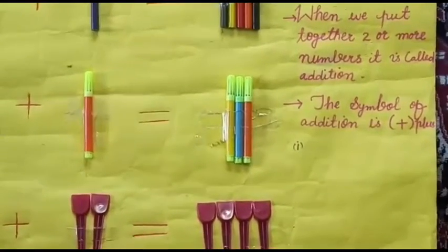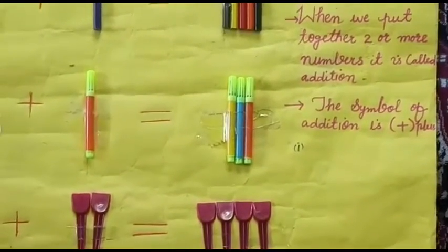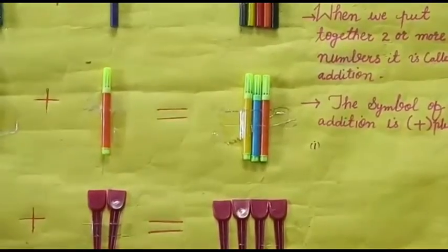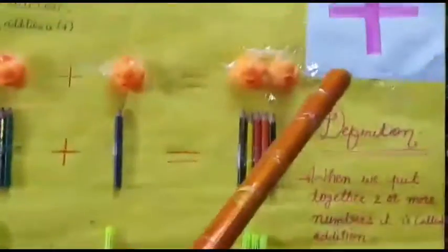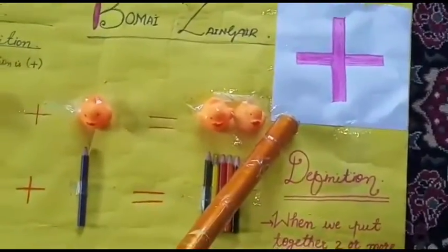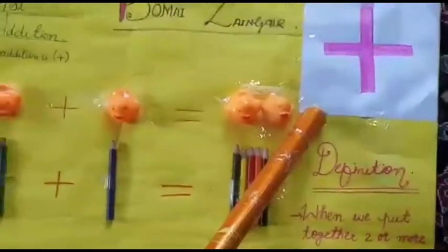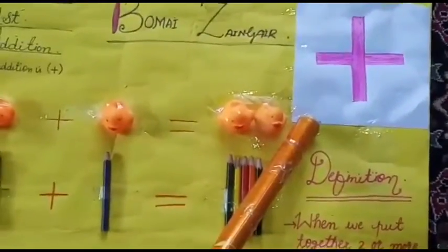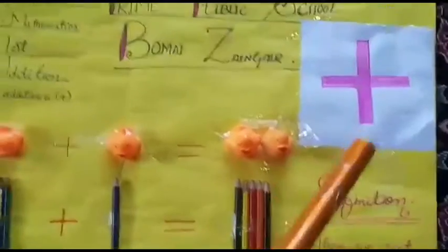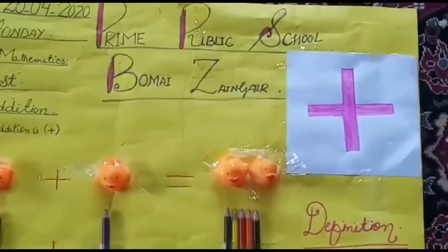Dear students, क्या आपको पता है Addition का Symbol क्या है? Symbol means निशान. Here you can see, जो आप देख रहे हैं यहाँ पे, यह Addition का Symbol है, means निशान. I will give you some examples.